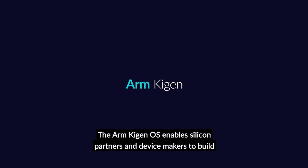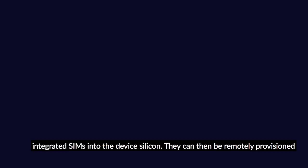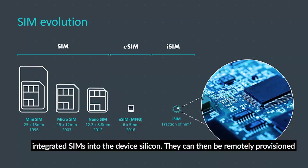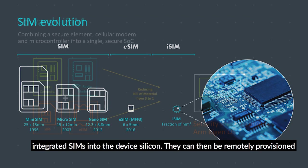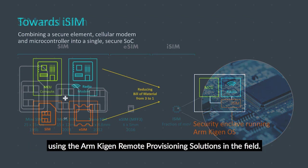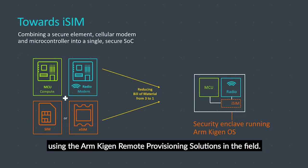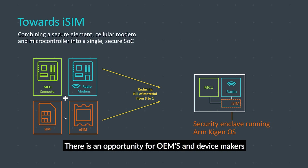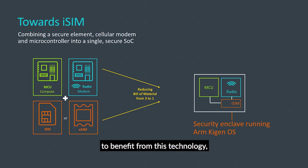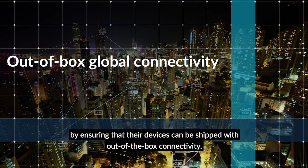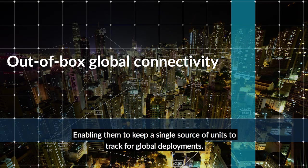The ARM Keegan OS enables silicon partners and device makers to build integrated SIMs into the device silicon. They can then be remotely provisioned using the ARM Keegan remote provisioning solutions in the field. There is an opportunity for OEMs and device makers to benefit from this technology by ensuring that their devices can be shipped with out-of-the-box connectivity, enabling them to keep a single source of units to track for global deployments.